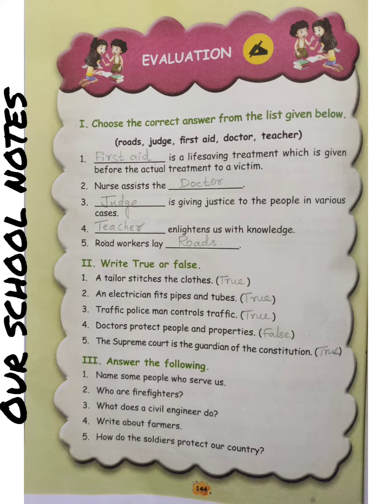Terminator 2. Write True or False. First one: The tailor stitches the cloth. The answer is True.